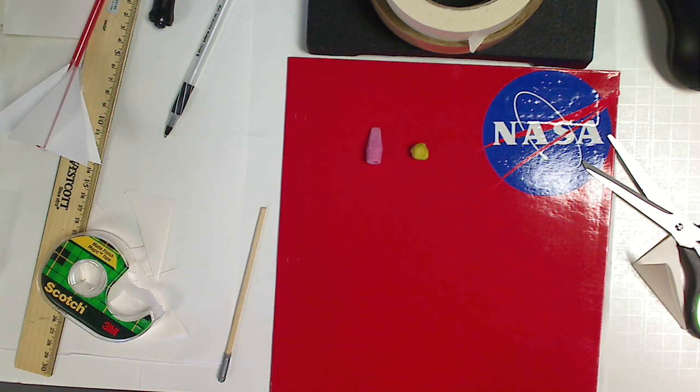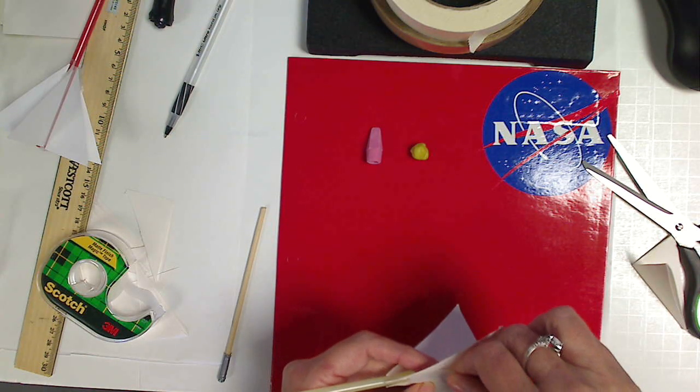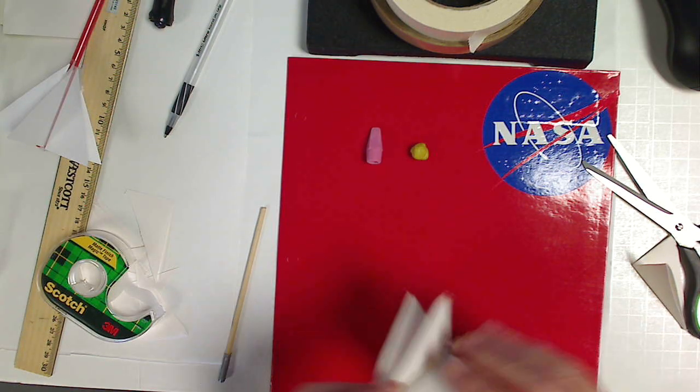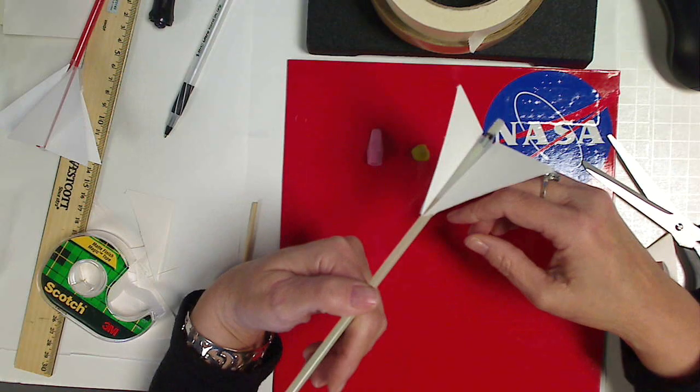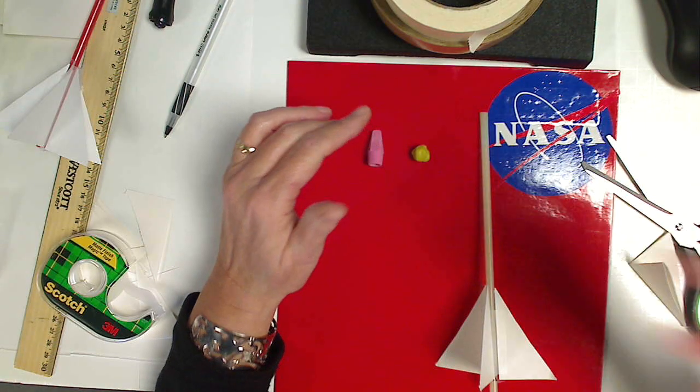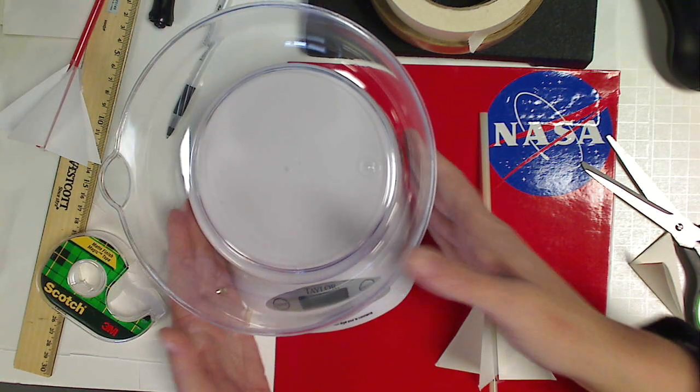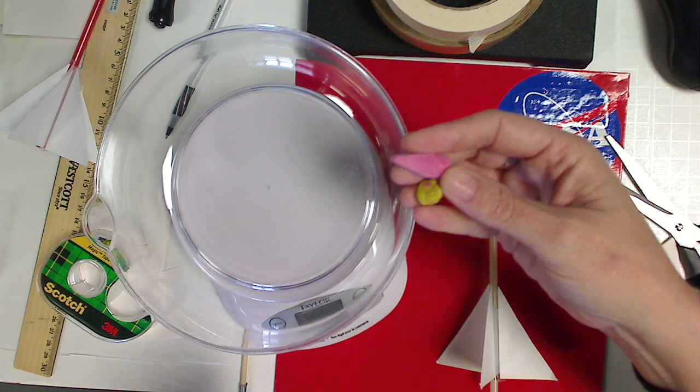Because weight is a serious issue with rockets. You don't want too much weight because the rocket as soon as it launches will drop. And you don't want too little weight because it'll spin in the air. So sometimes, if you have it available to you, you can use a scale and weigh your cone material.